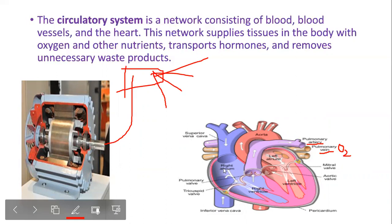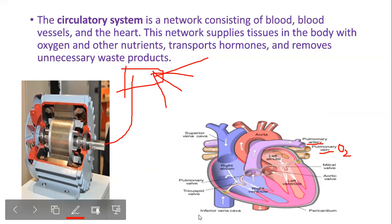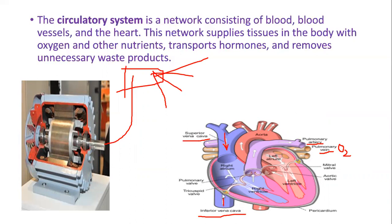Blood enters the heart through two large veins: the superior vena cava and the inferior vena cava. These empty oxygen-poor blood from the body into the right atrium of the heart. As the right atrium contracts, the blood enters the right ventricle. When the right ventricle is completely filled with blood, a valve controls the flow.